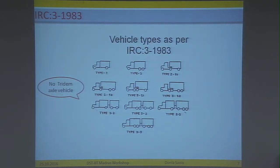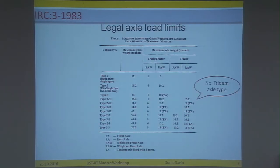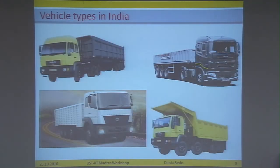Now let us see IRC 3, which stipulates the dimensions and weights of vehicles in India. We can see that no tridem axle vehicle is included in this code, and it also shows the legal axle load limits for the listed vehicle types. Since no tridem axle vehicles are shown, we cannot find a legal axle load limit for tridem axles in this code.